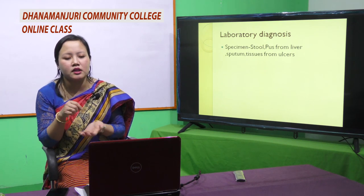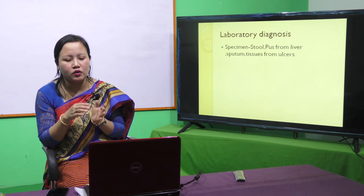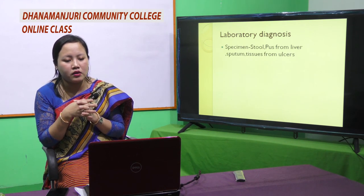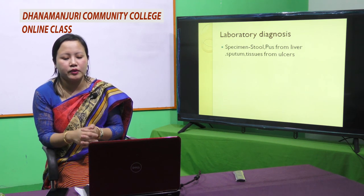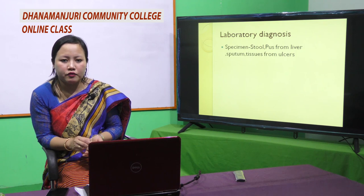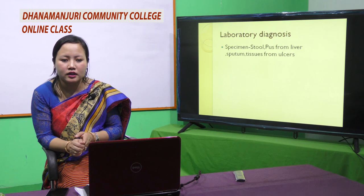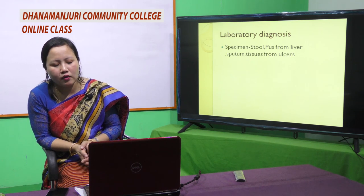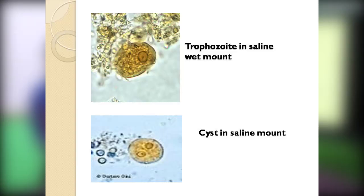To make the saline mount, add a drop of saline, mix with the stool sample, cover with a coverslip, and observe under the 40x or high-power objective. For the iodine mount, add a drop of iodine, mix with the stool, cover, and observe under the high-power objective. The trophozoites and cysts will be seen under the microscope.